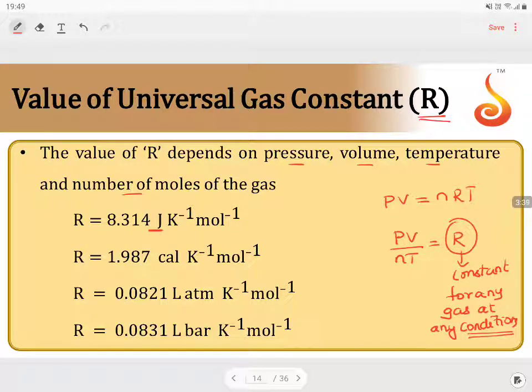Corresponding to the units, if you say joules 8.314, calories 1.987, liter atmosphere 0.082, liter bar 0.083. So please be aware the units in which you are expressing will decide how this value has come.